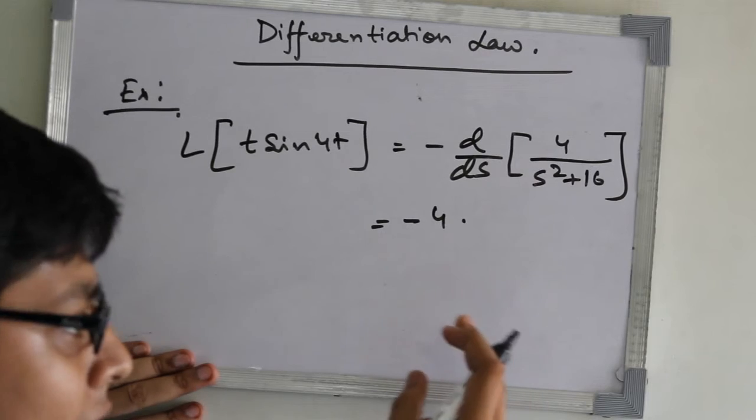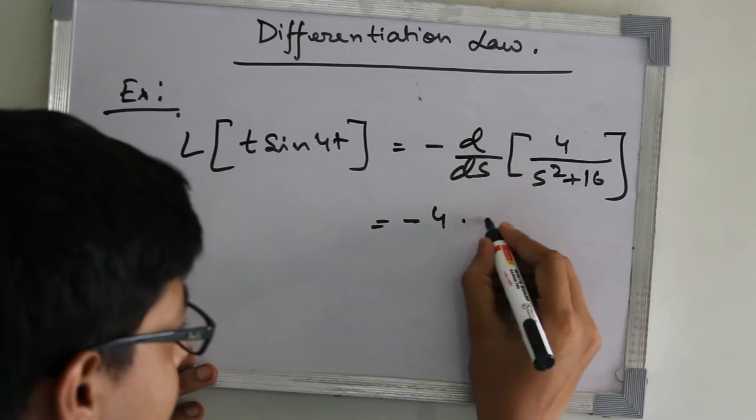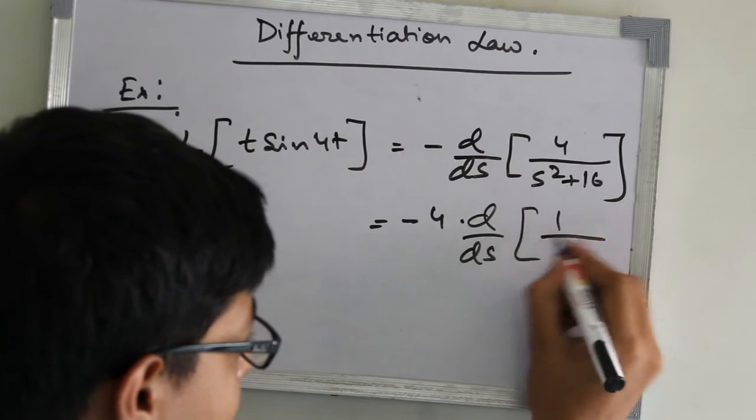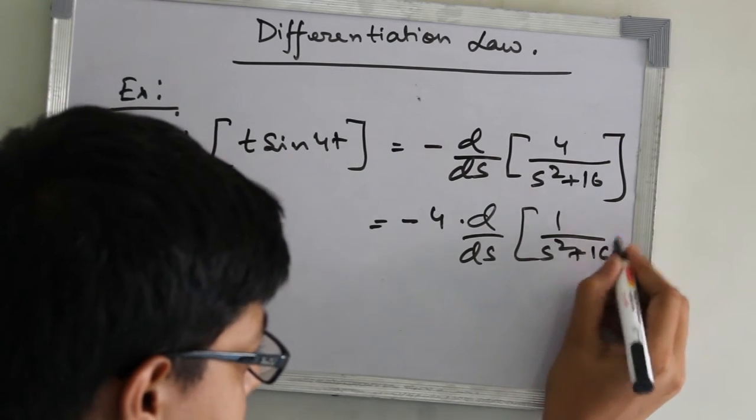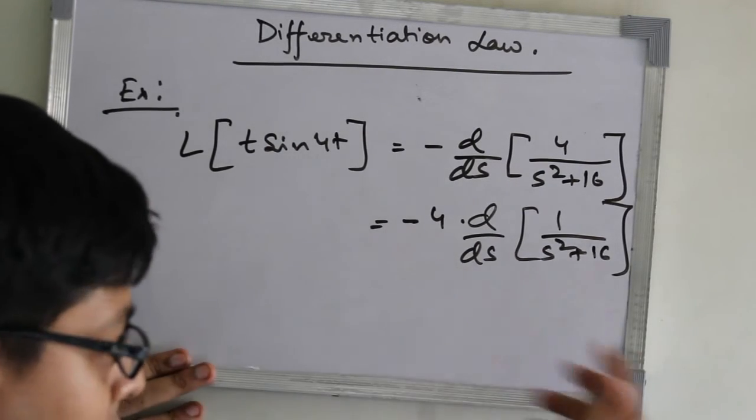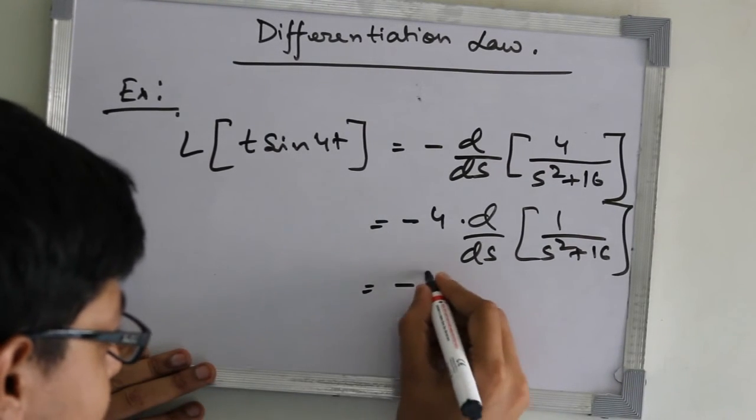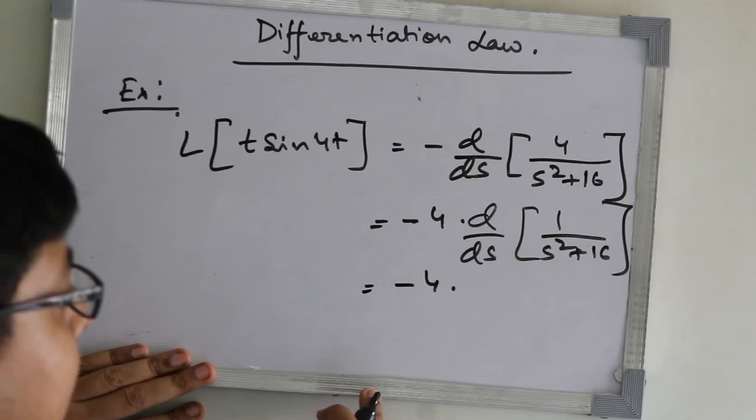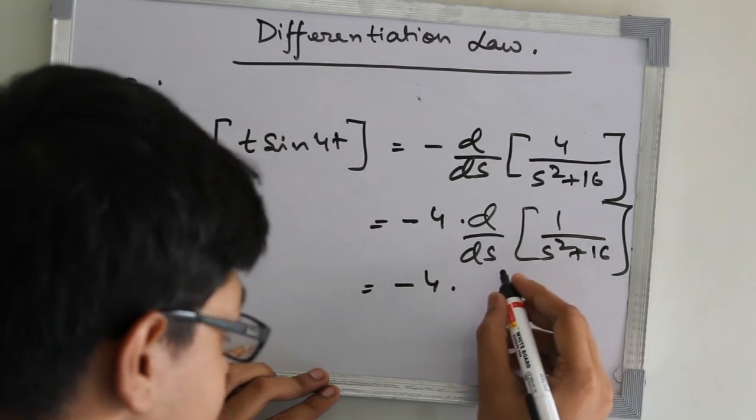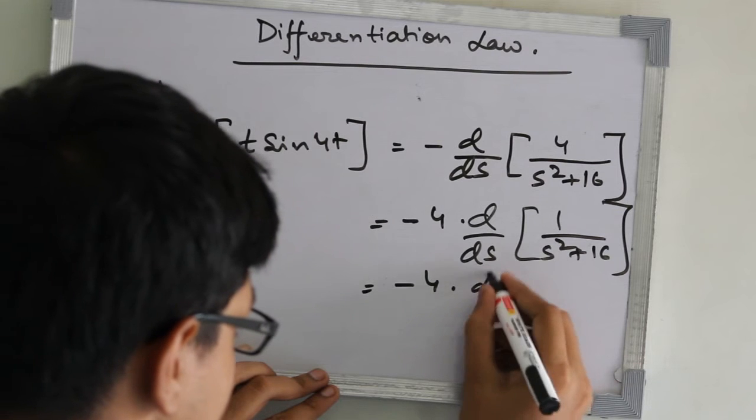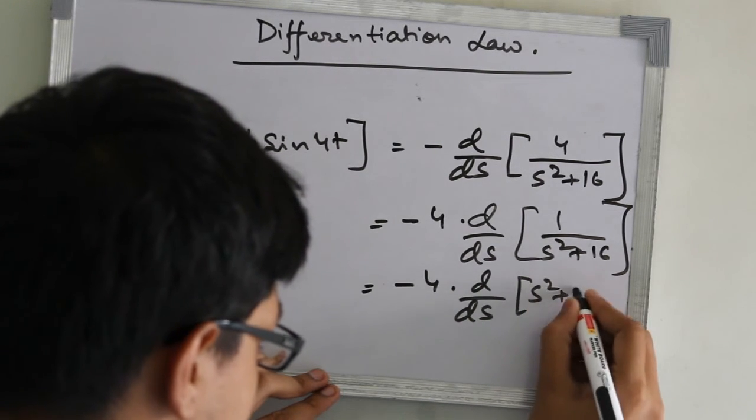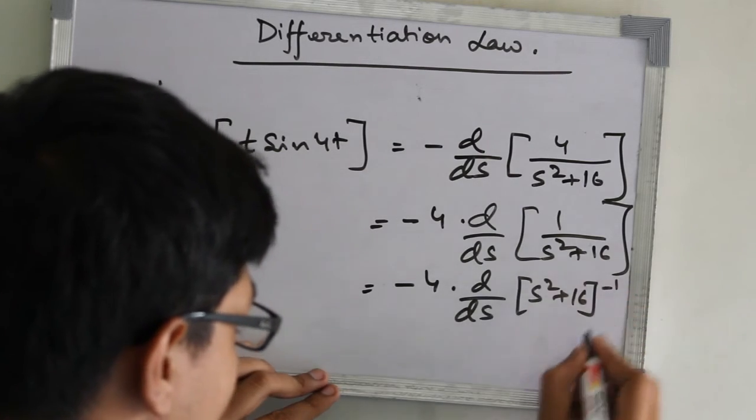Now, d/ds of s² into d/ds of 1 upon s squared plus 16. Now, this differentiation from here, we will get minus 4 into d/ds of s squared plus 16 whole to the power minus 1.